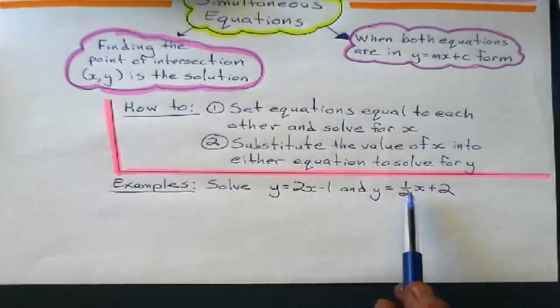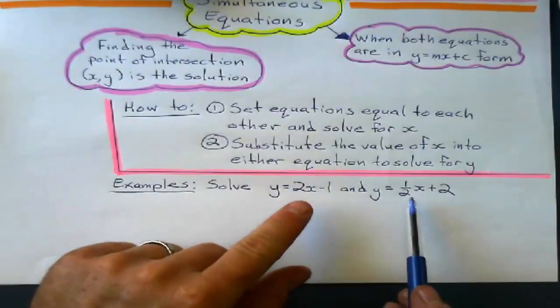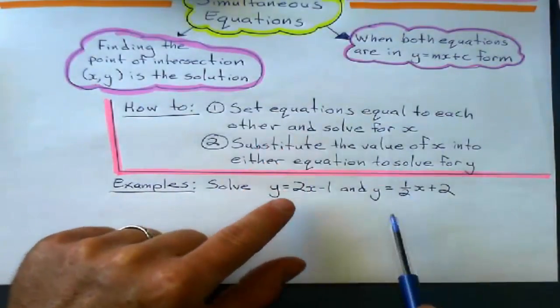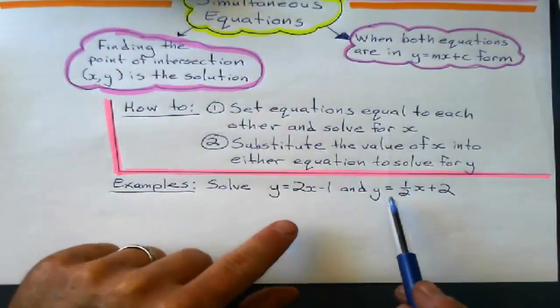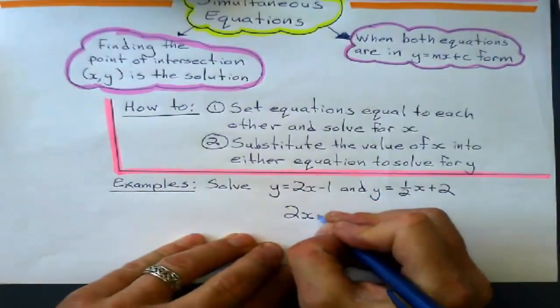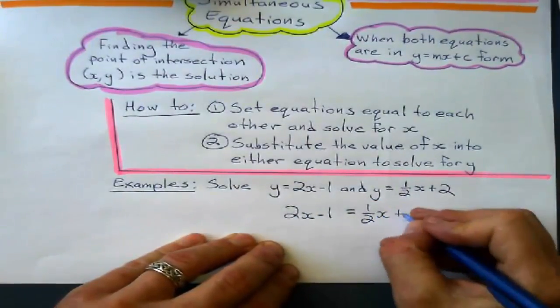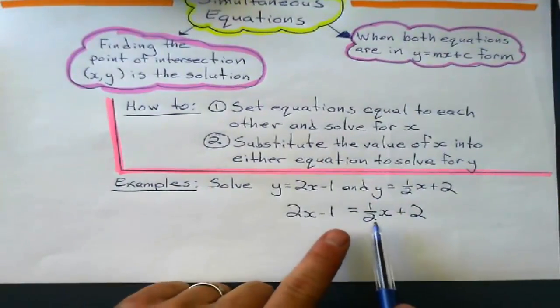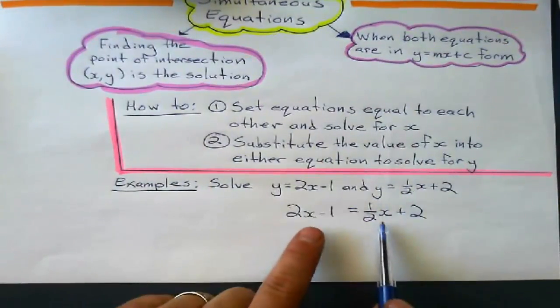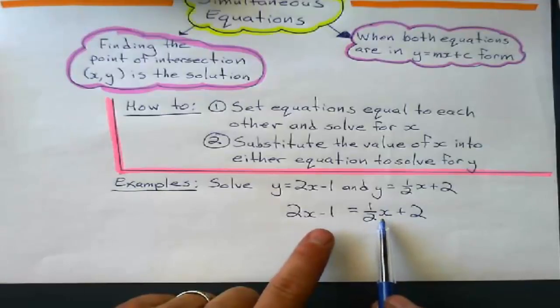So, let's look at this first example. y equals 2x minus 1 and y equals 1 half x plus 2. I'm going to set the equations equal to each other and I'll say 2x minus 1 equals 1 half x plus 2. They both equal y, so I can set those.